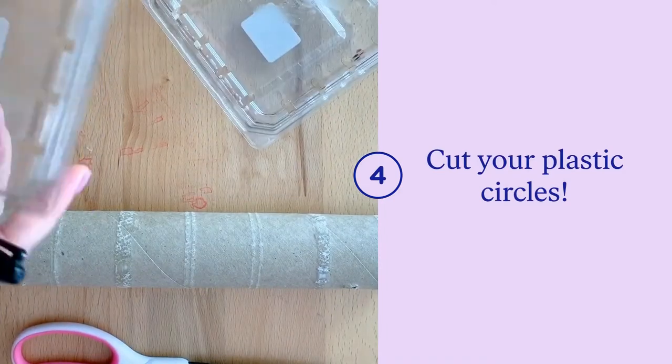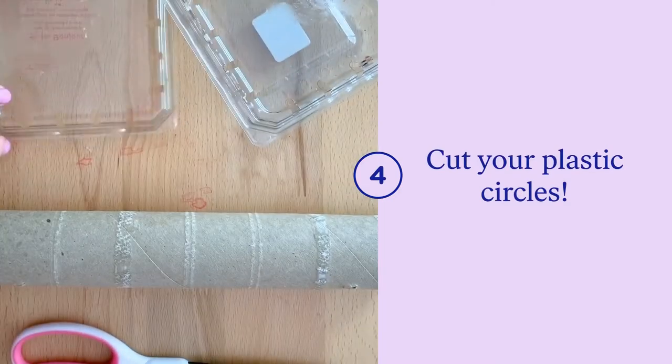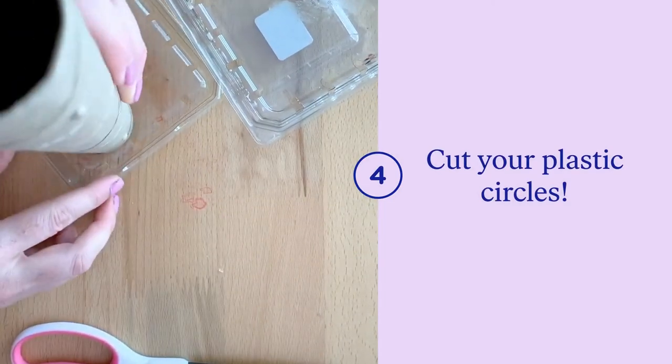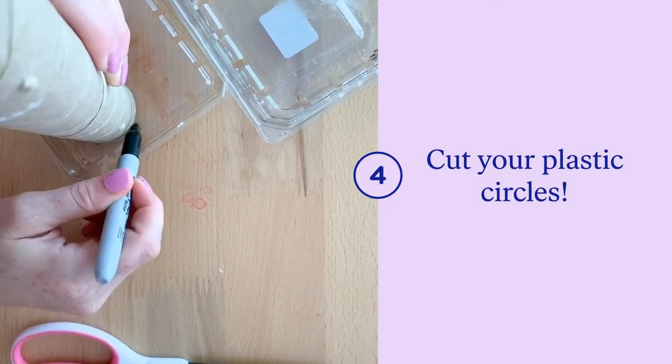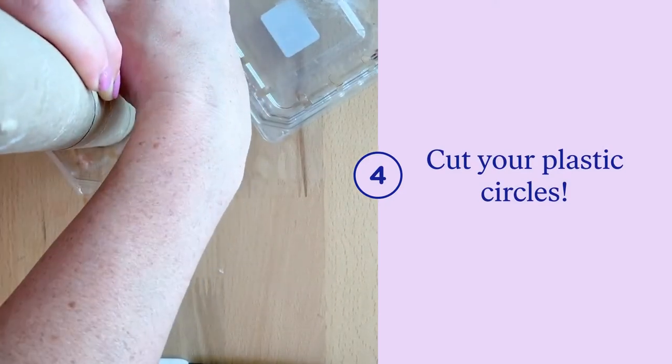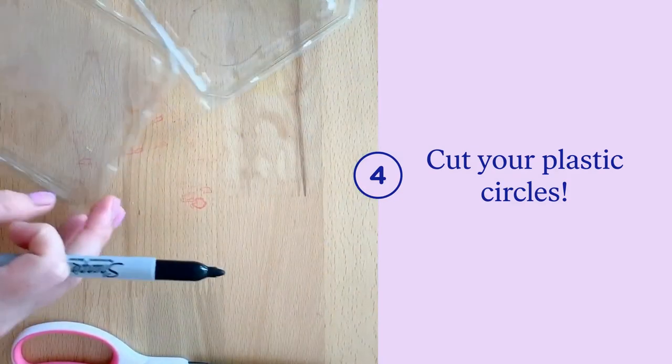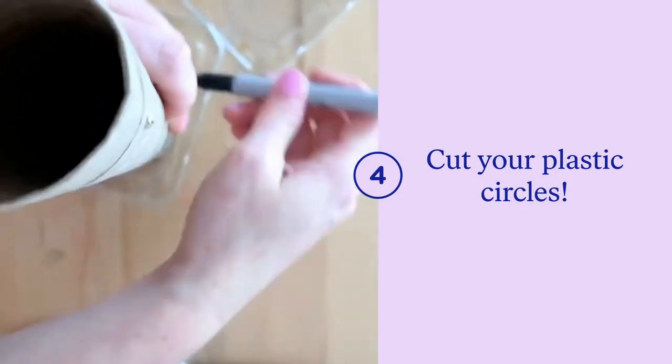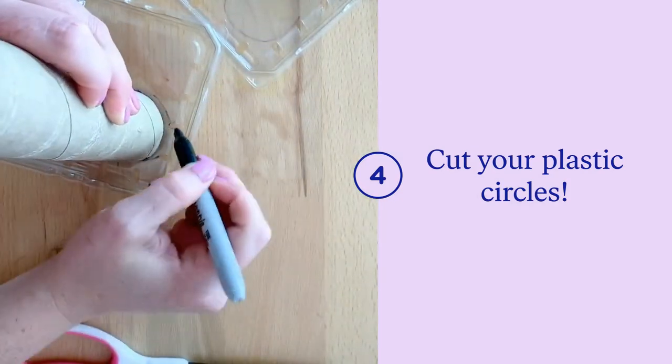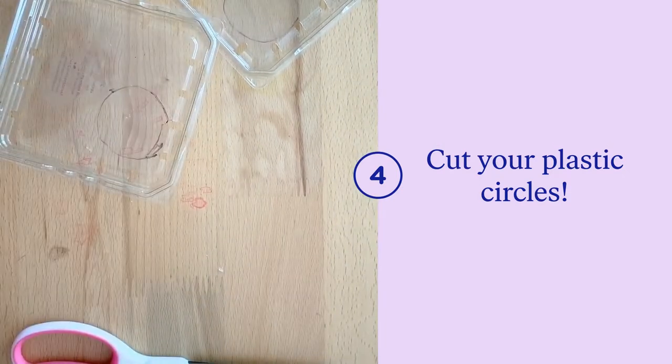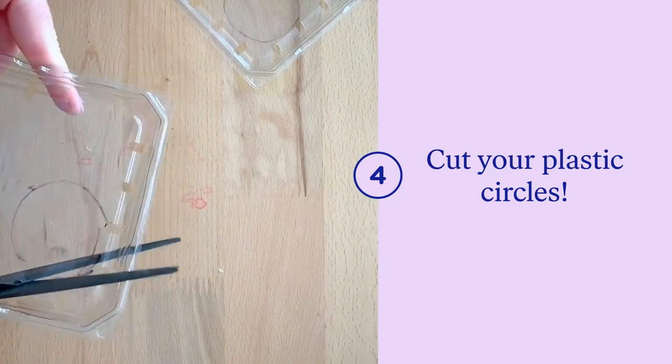Step one: grab your paper towel tube, your clear containers, a marker, and your scissors. Place your tube down on the clear flat lid of the container and trace around the circle. Then using your scissors, cut out your circles. We're going to need two of these.